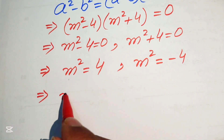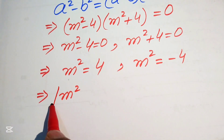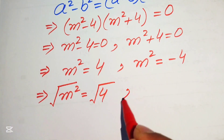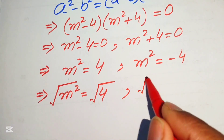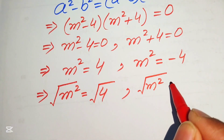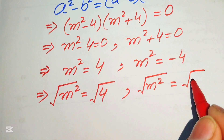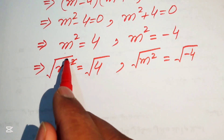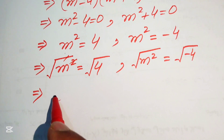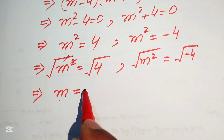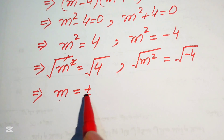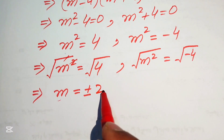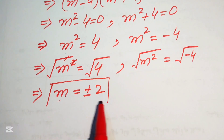Taking the square root of both sides in the first case: √(m²) = √4, so m = ±2. These are the two real solutions of the given equation.